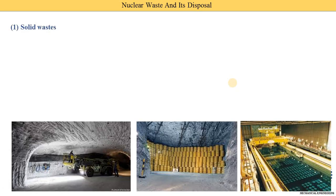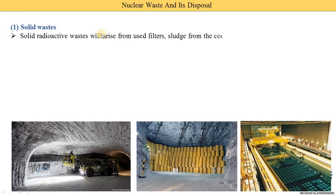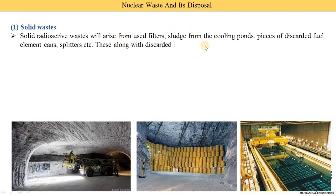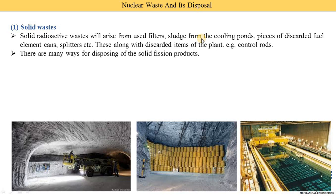First we understand about solid waste — nuclear waste present in the solid state. Solid radioactive waste arises from the use of filters and sludge from the cooling ponds. Pieces of discarded fuel element cans and splitters — the fuel coming out from the nuclear plant — are also waste. Along with discarded items of the plant like control rods, which are components we need to replace after some time, these are the various sources of solid waste.